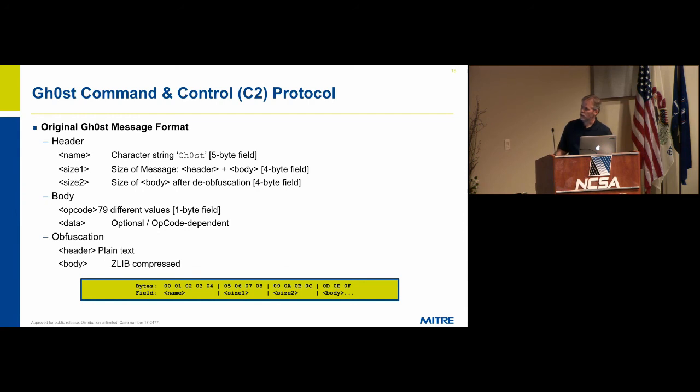Ghost is very complicated and extended. The implant command set consists of about 50 different opcodes, and then the responses which are called token opcodes from the implants. The base part of this protocol consists of a header that initially was the characters GH0ST, ghost with a zero in it, followed by a four-byte size of the message, and then the size of the body. Most of them are zlib compressed.